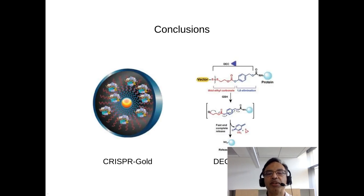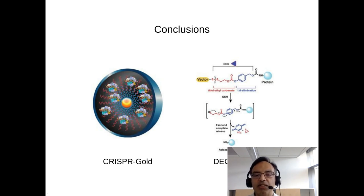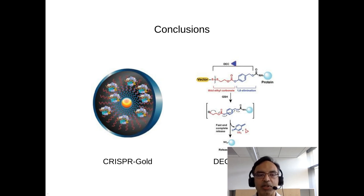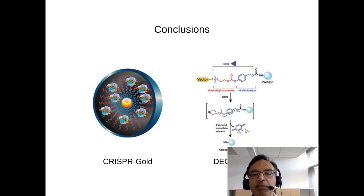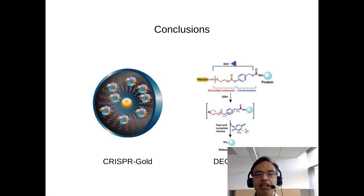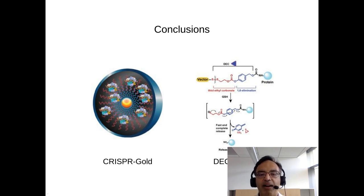In summary, I've talked about two different methodologies for delivering Cas9. The first was CRISPR-GOLD, which was able to do gene editing in muscle tissue and also in the brain. The second technology was the DEC linker, which allowed us to conjugate peptides and polymers to Cas9 in a reversible manner while retaining Cas9 activity. I want to thank the people who did the work — all the CRISPR-GOLD work was done by graduate student Kunwu Lee, now CEO of GenEdit, and the DEC linker work was done by postdoc Mao Mao He. Thank you for your attendance.